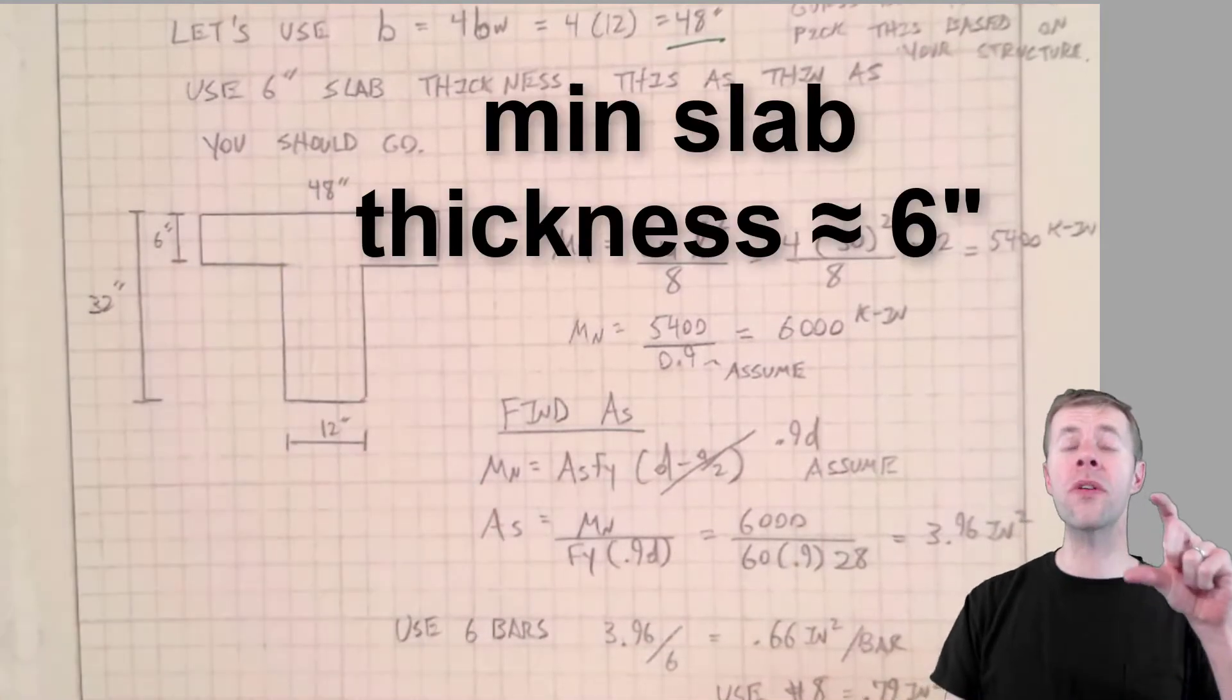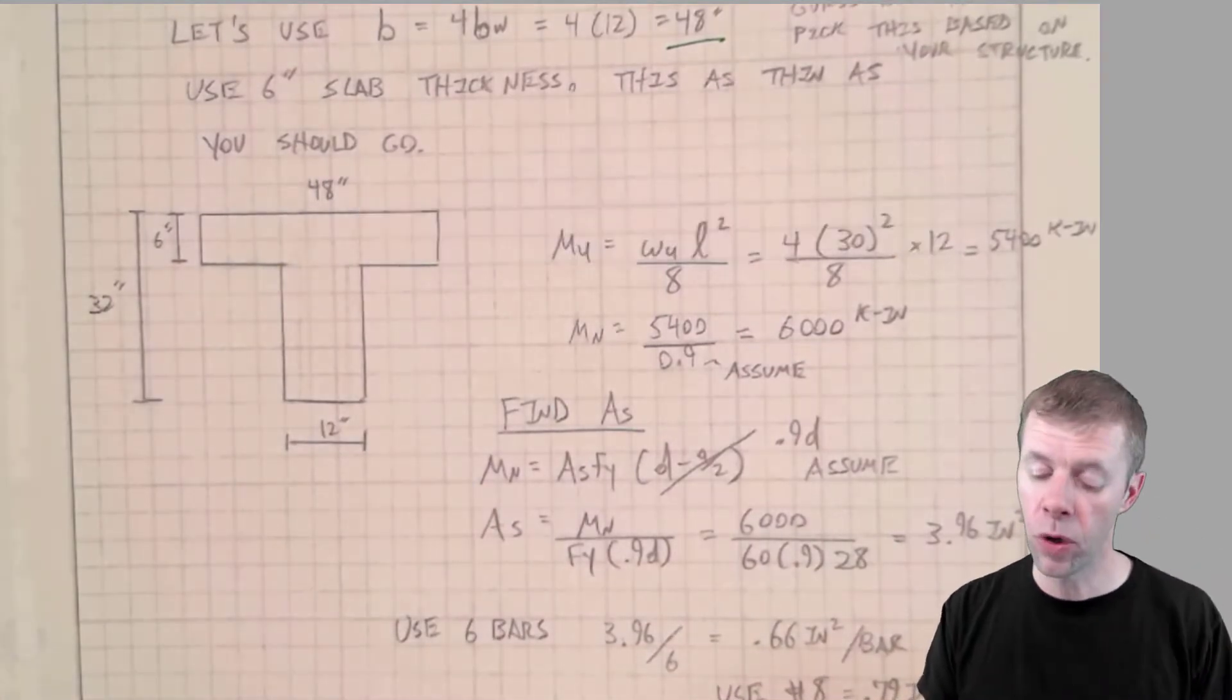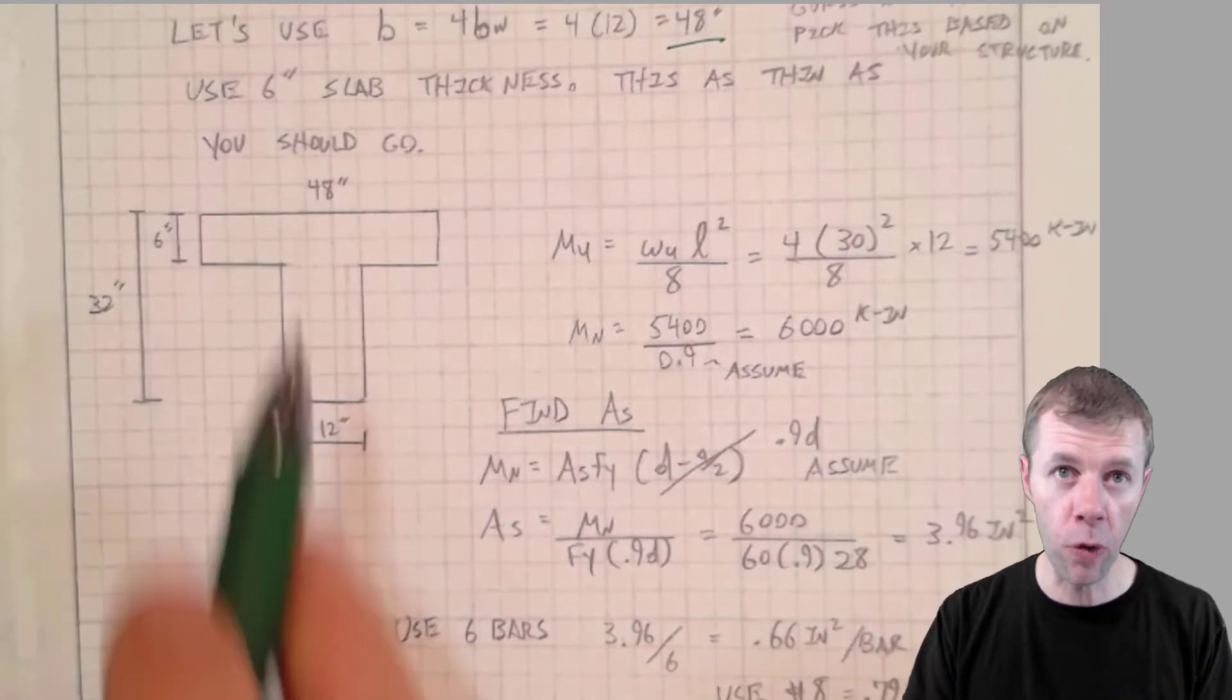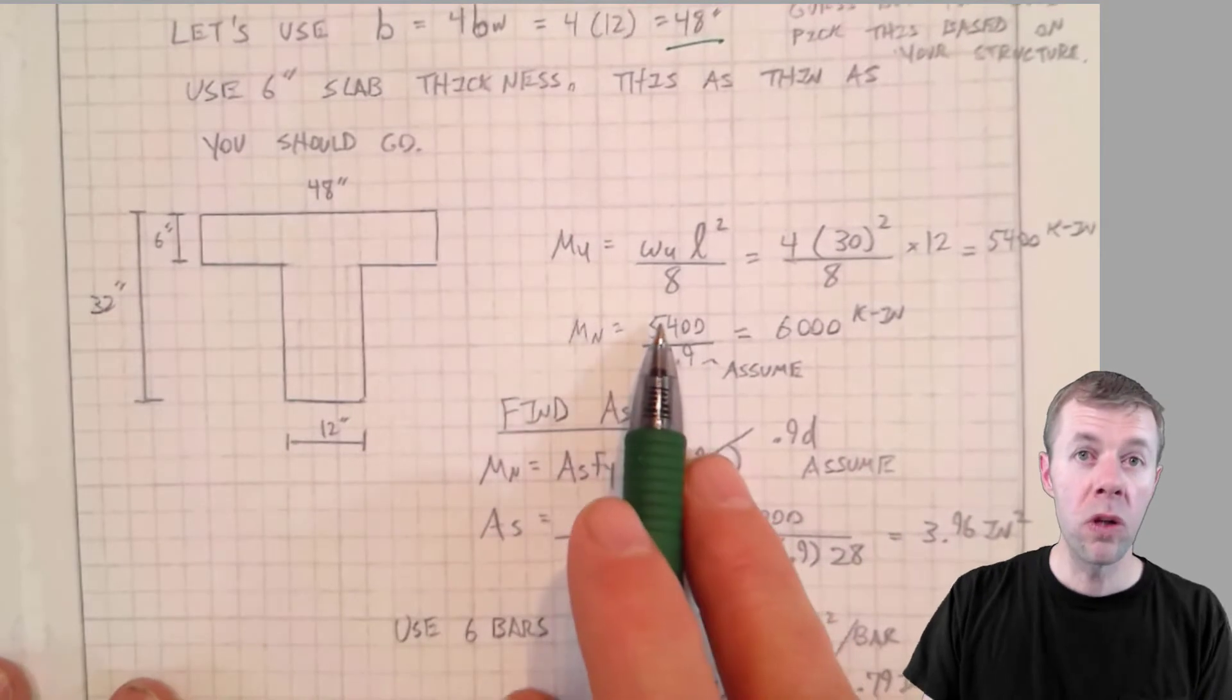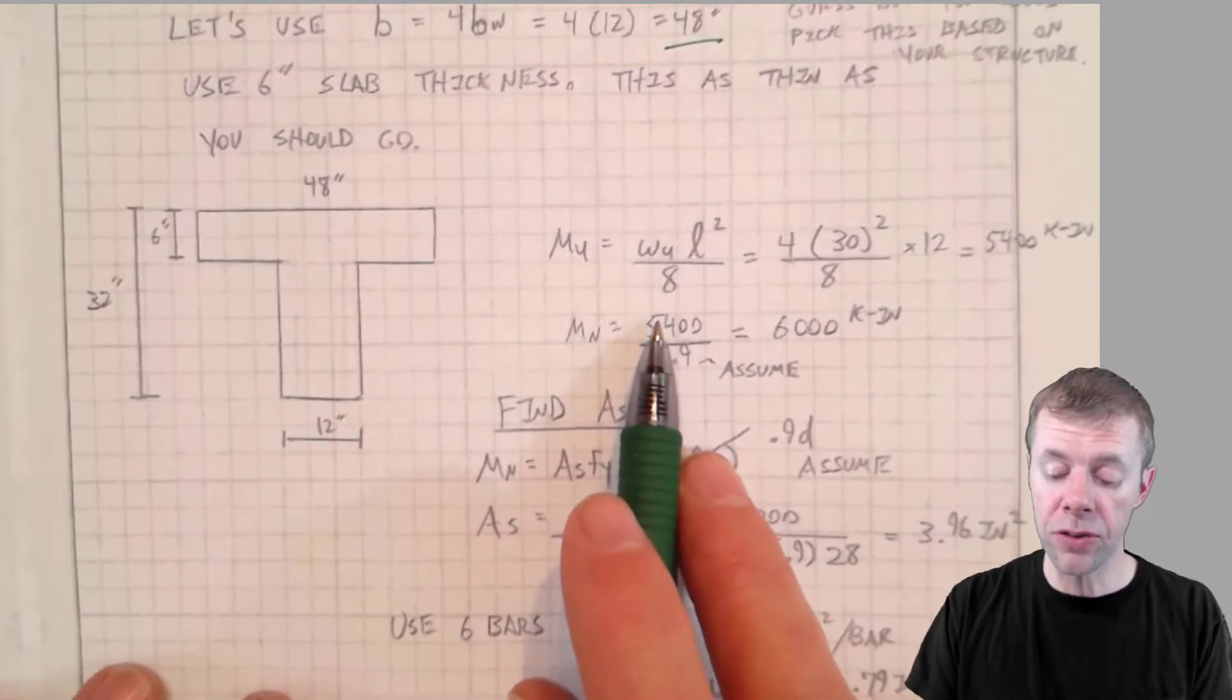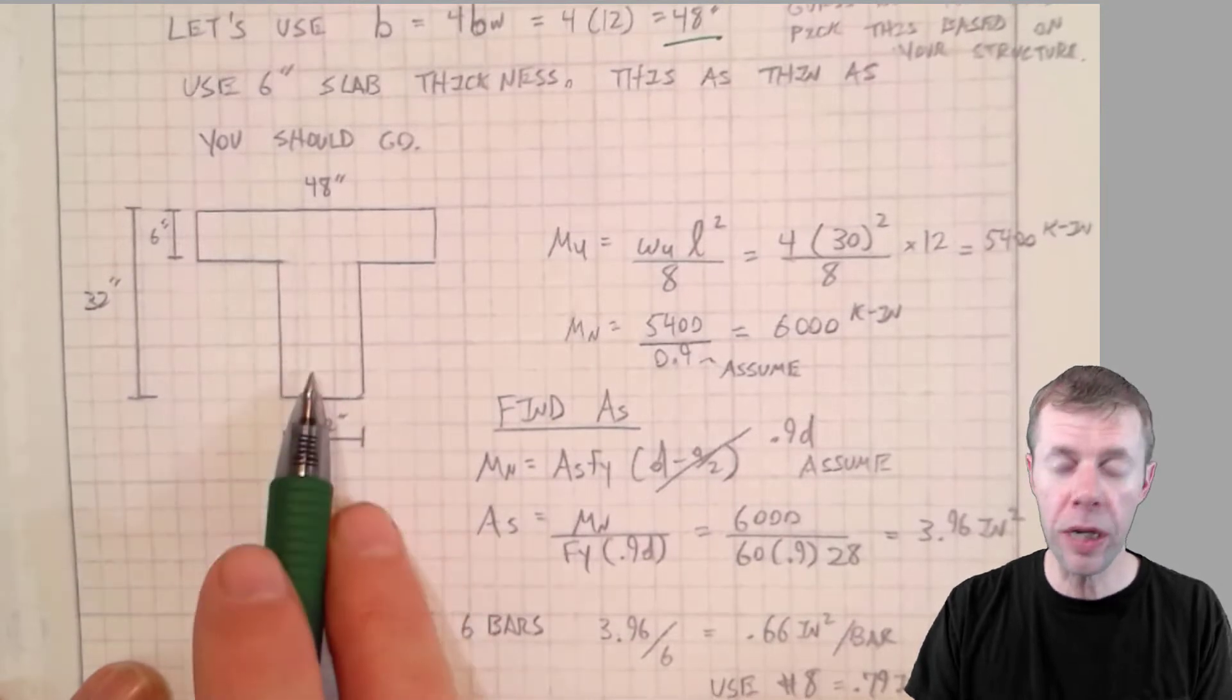Have you ever designed slabs before? Six inches is as thin as you can go with a slab that's used in a fire type environment where you might expect to have fire above or below the beam. So six inches is the minimum. So let's motor on. We got a good guess at an actual cross-section.